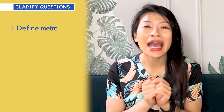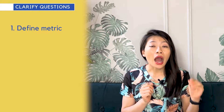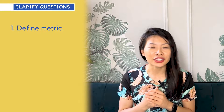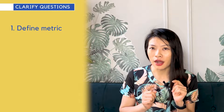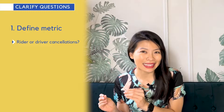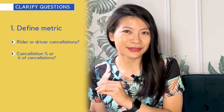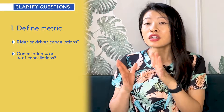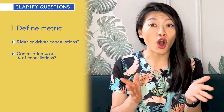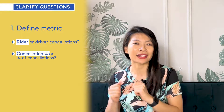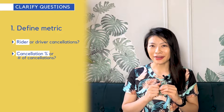Starting with Part 1: clarify the question. The first thing to clarify is the actual metric that's going up — this will help you come up with specific hypotheses. If the metric is ambiguous, ask further questions. For example: is that rider cancellations or driver cancellations? And are we talking about the cancellation percentage or the total number of cancellations? If total cancellations are going up but rides booked are also going up, that might be expected. Let's assume the interviewer tells us it's the rider cancellation percentage.